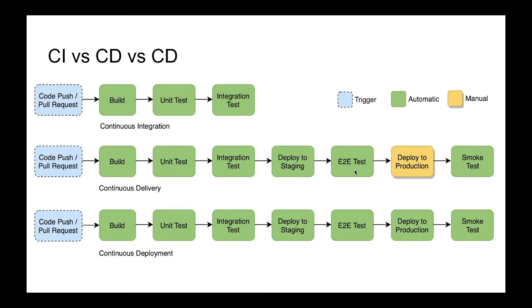What is important here is that it's manual — somebody needs to click a button and make the decision to release the latest version to production. After that we can run some smoke tests or send some notifications.